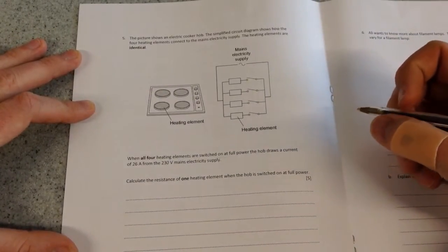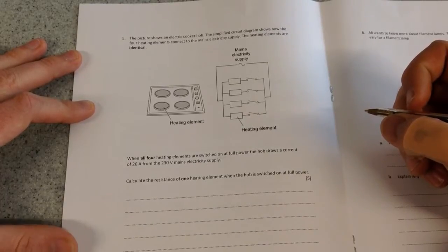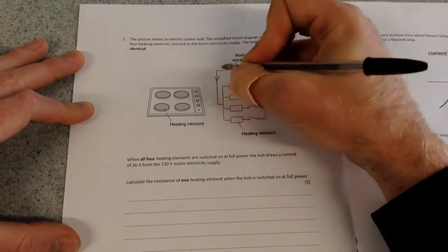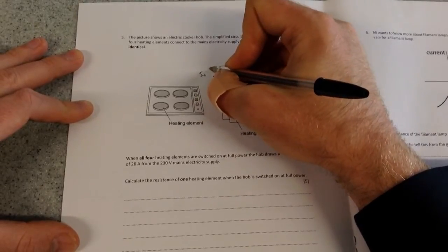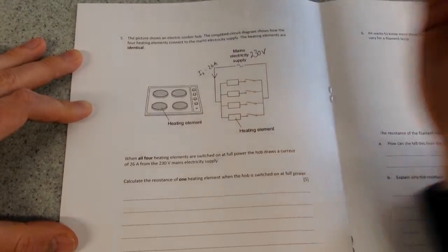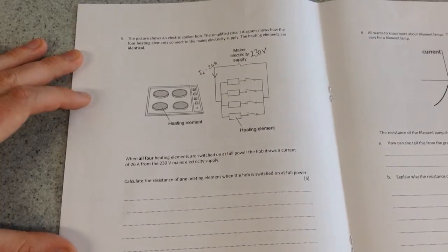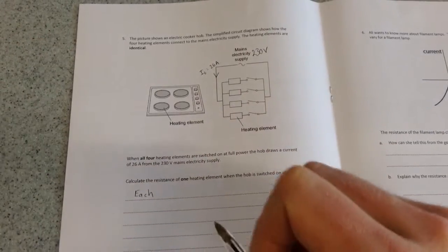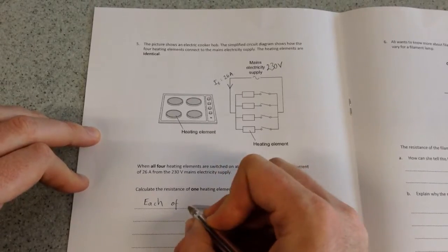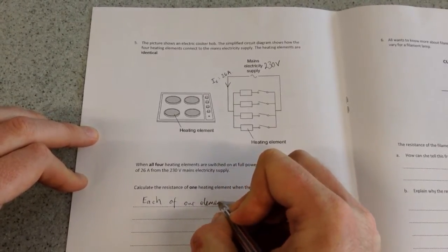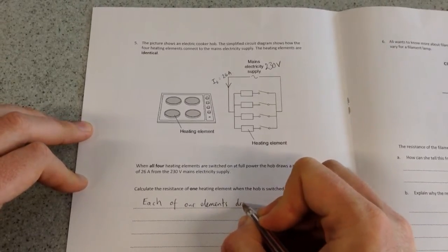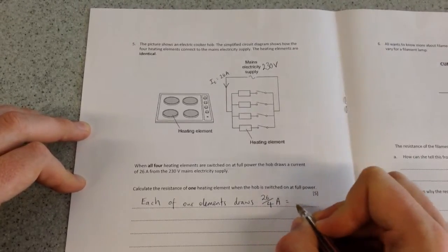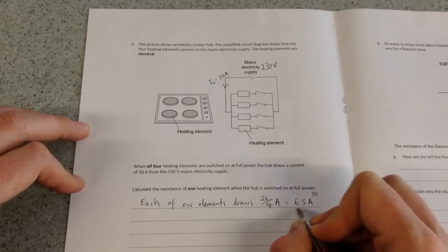The hob draws a current of 26 amps from the 230 volt mains electricity supply. So we have 230 volts in supply and we have a total current of 26 amps. Now the easiest way to do this question is to start by saying each of our elements draws a quarter. So 26 over 4 amps, which gives us 6.5 amps of current.